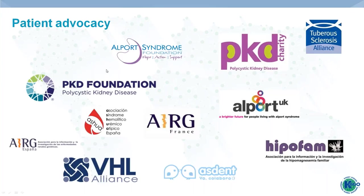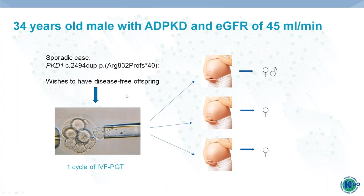Patient advocacy groups are of great help—patients share experiences and feel comfortable among others with the same disease. Case 1: A 34-year-old male with ADPKD and GFR of 45—a sporadic case with a truncating mutation in PKD1—who wanted disease-free offspring. The couple opted for IVF with PGT. With a single cycle of IVF-PGT they obtained enough embryos for three pregnancies: twins in the first, a girl in the second, and a girl in the third—four children from just one cycle. An extremely nice outcome.